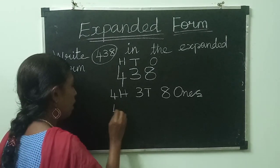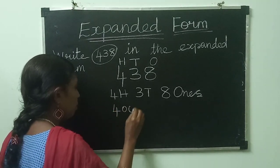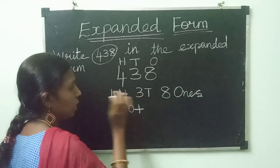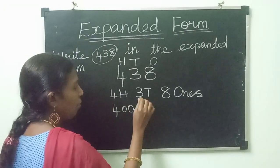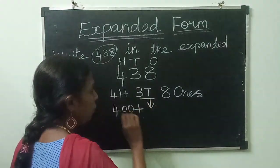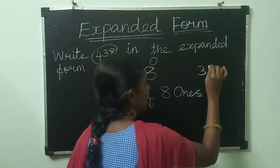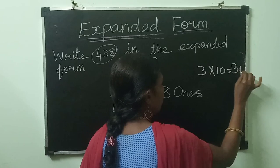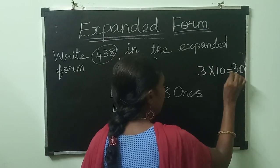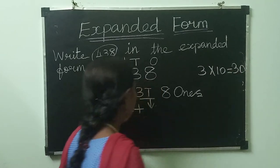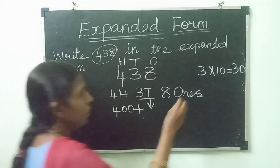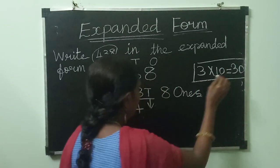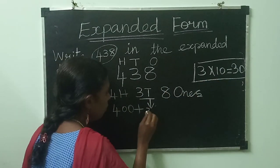You know very well how to write 400. Plus 3 tens — you should write the value of 3 tens. 3 tens are 30. You know very well the 10 times table: 3 tens are 30. Write this value here.